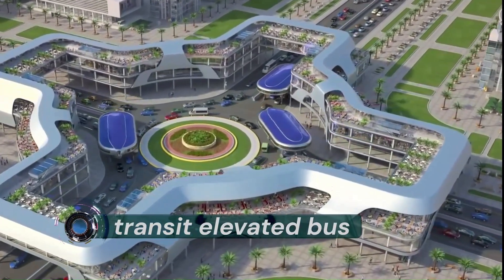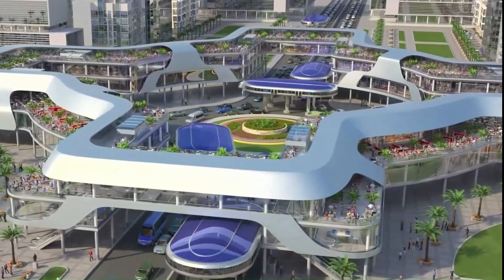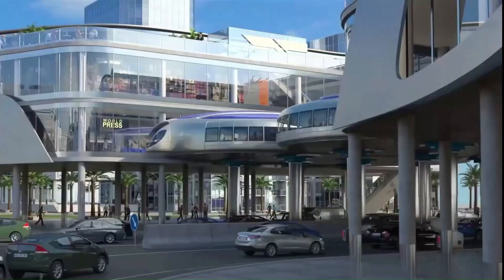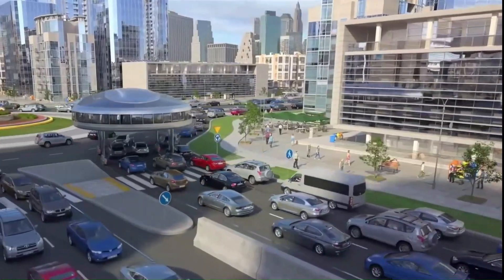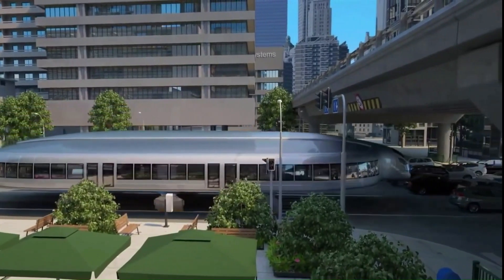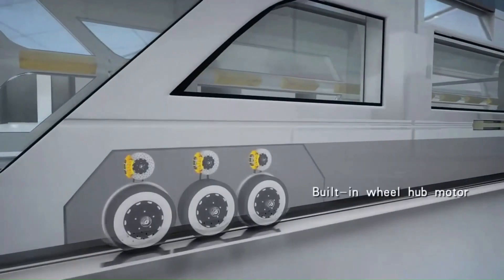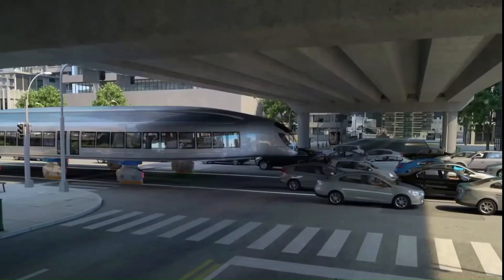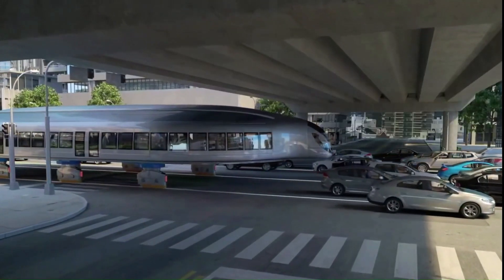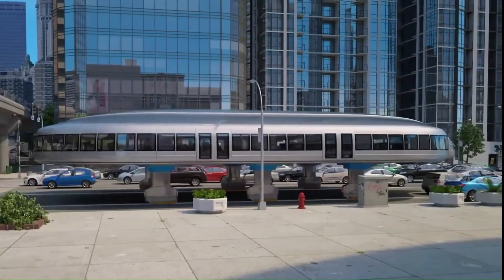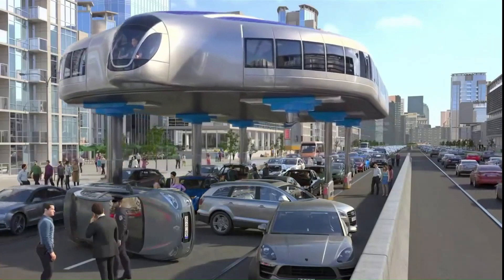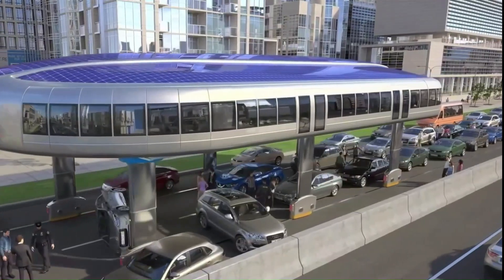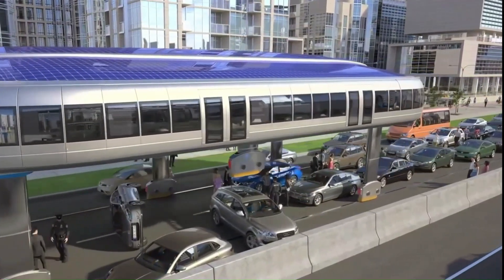Transit Elevated Bus. Chinese company Shenzhen Washer Future Parking Equipment proposed the innovative design as a way of addressing the problem of congestion caused by rapid urbanization and population growth of many of China's cities. The TEB is a bus that straddles traffic by driving over the top of it, running along fixed tracks. Its main compartment is elevated, leaving the street clear for cars underneath.